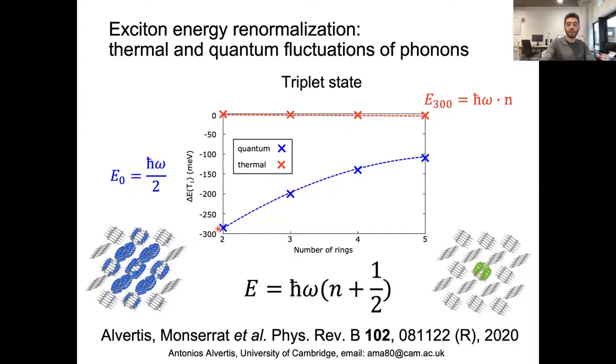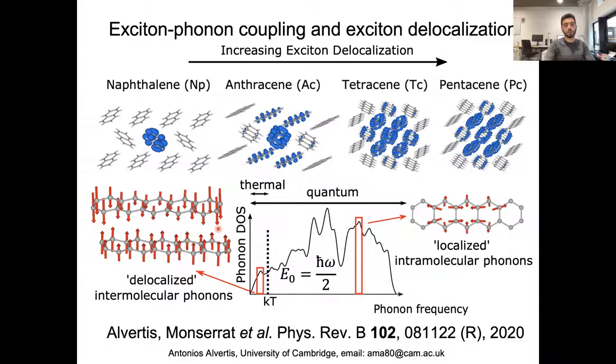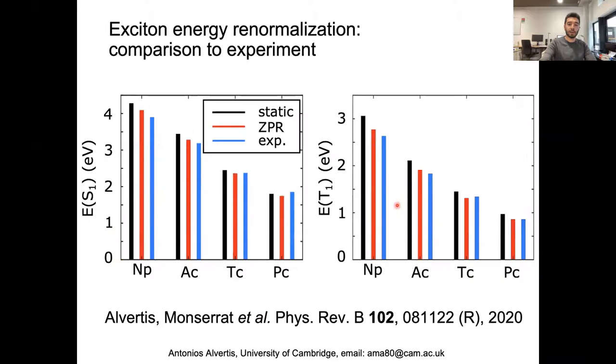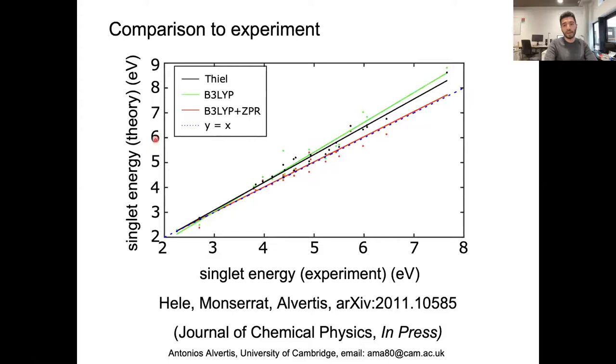The physical picture that emerges is that as we go towards more delocalized excitons, thermally activated phonons become more relevant because they modulate orbital overlap, whereas localized excitons mostly care about quantum fluctuations. We can systematically improve agreement to experiment when we account for these effects. Finally, we generalized to the TEAL set of molecules. The correction can be really large in some cases, more than one eV.